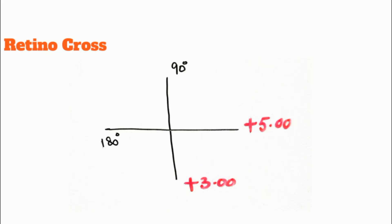You should be very careful while giving the prescription to the patient. The lenses that you used for neutralization are not the powers you prescribe to the patient. These are the values at which the patient is neutralized, but you have to convert these values into the prescription form — how much sphere and how much cylinder is required for the patient to correct the refractive error.